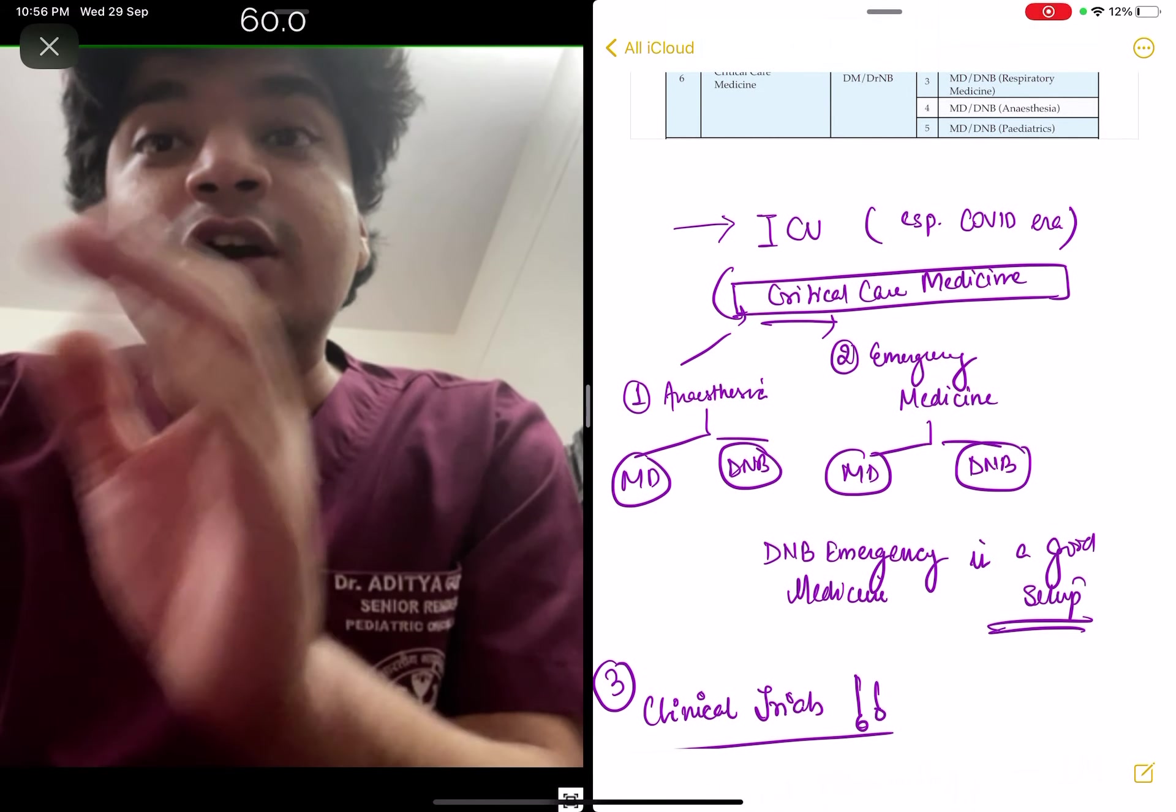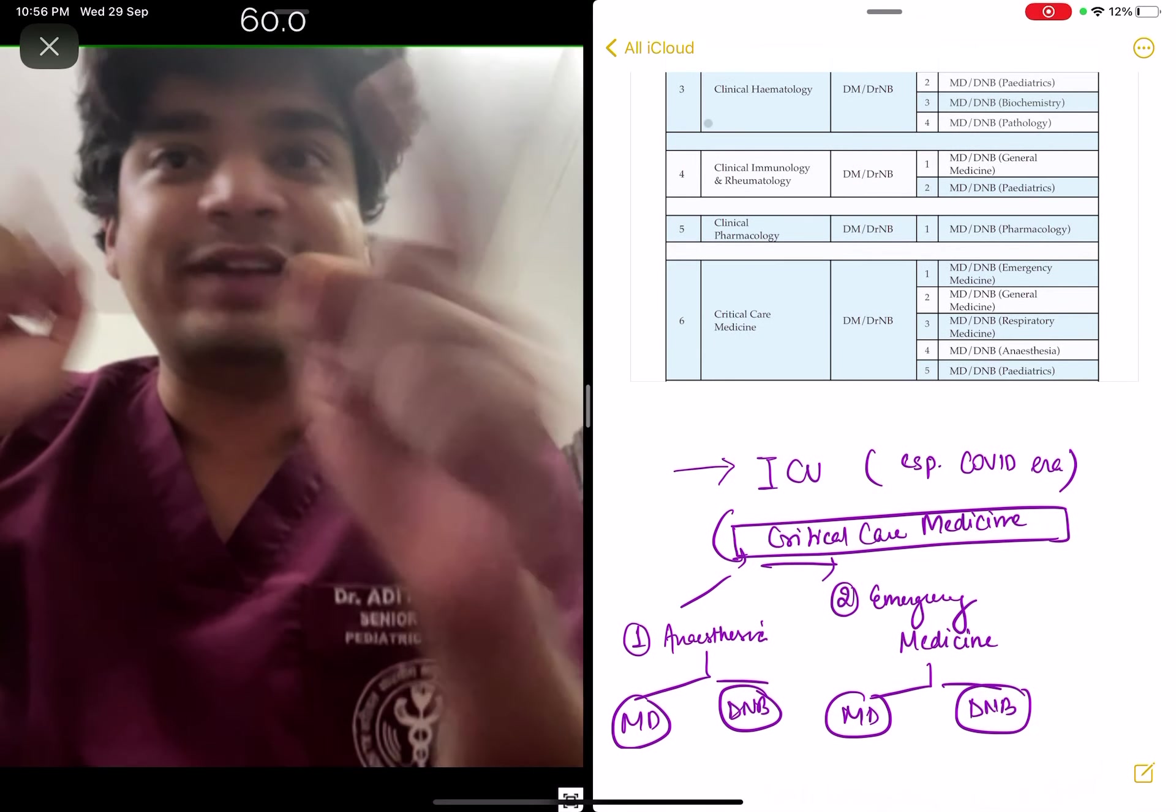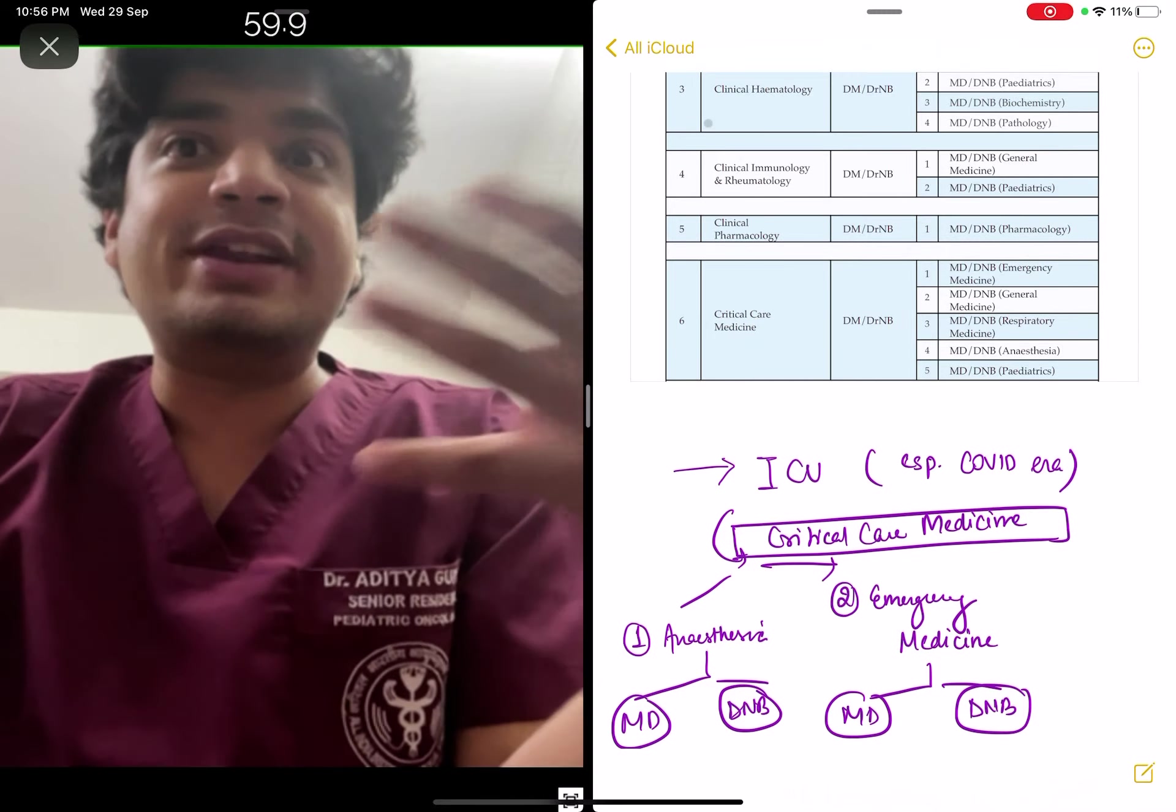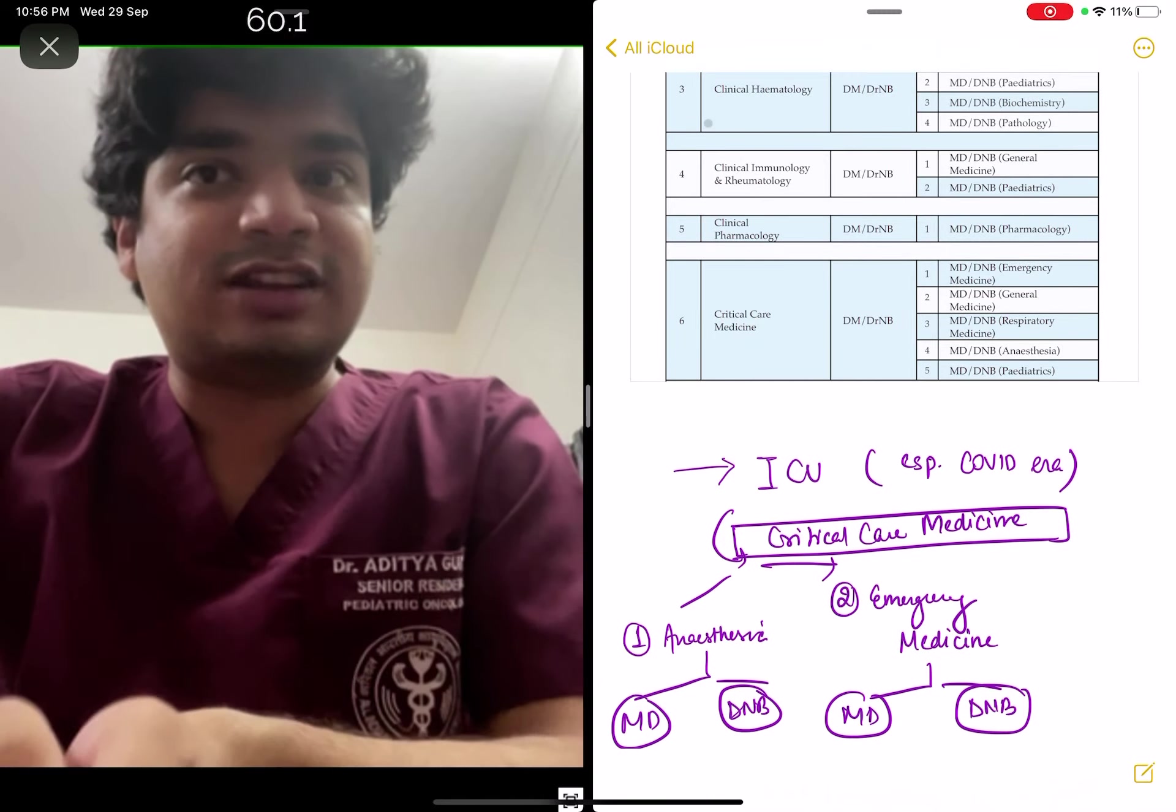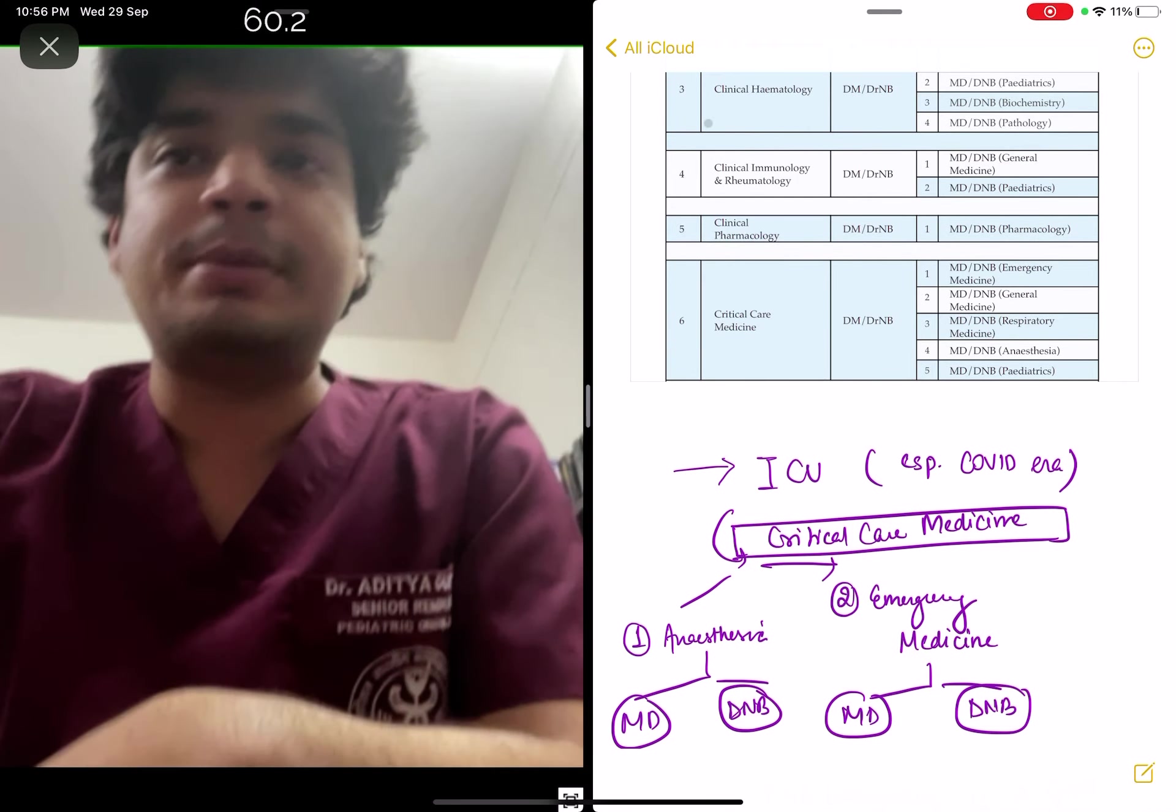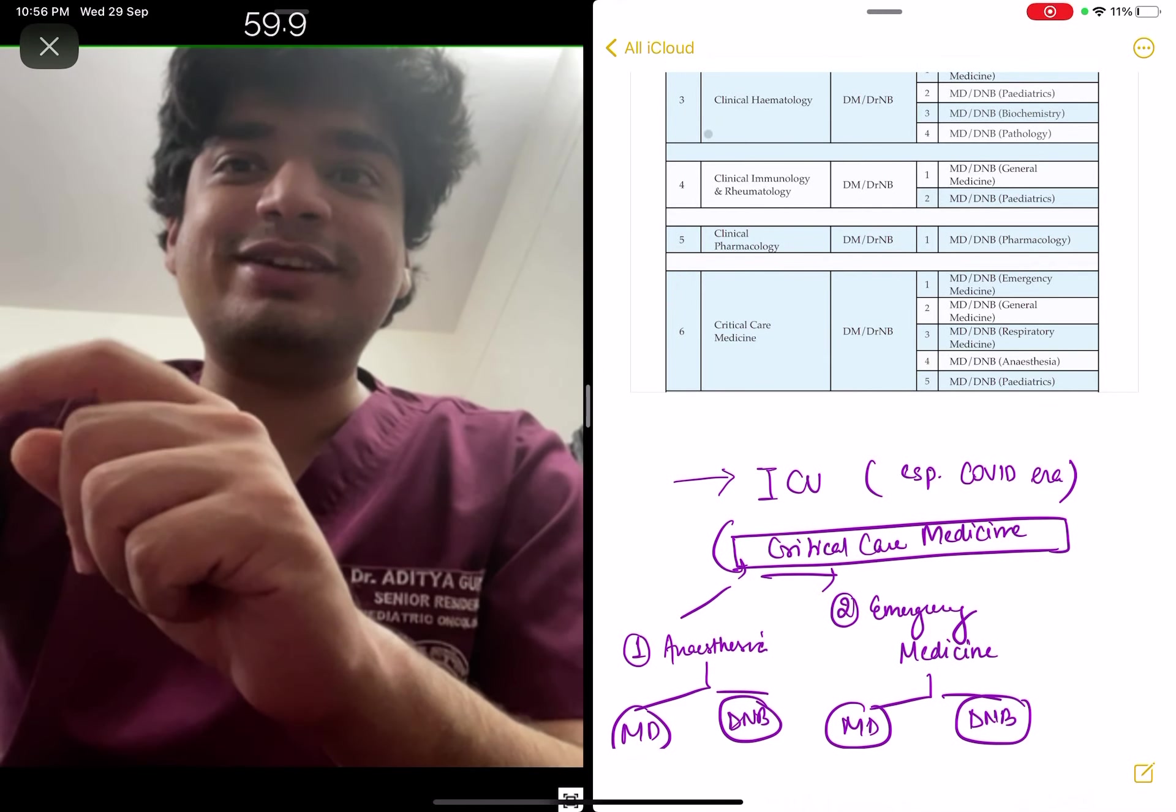A DNB emergency medicine in a good setup, in a good private hospital can give you a shot at critical care medicine. Maybe you're not getting medicine, but emergency medicine will cover essentially all the emergencies and aspects of medicine. Then you can go to critical care medicine, you'll be the boss of ICU.